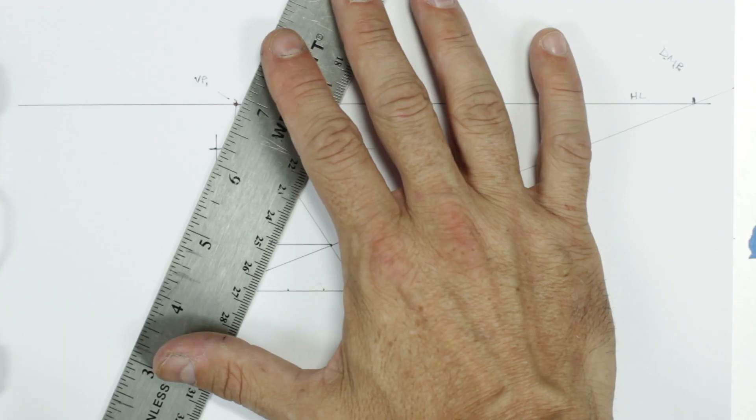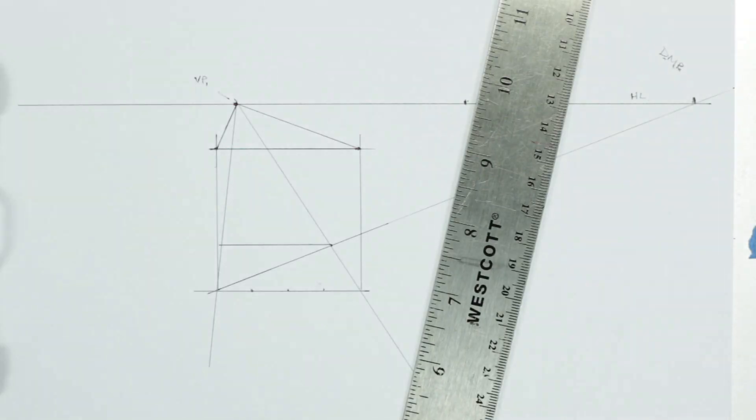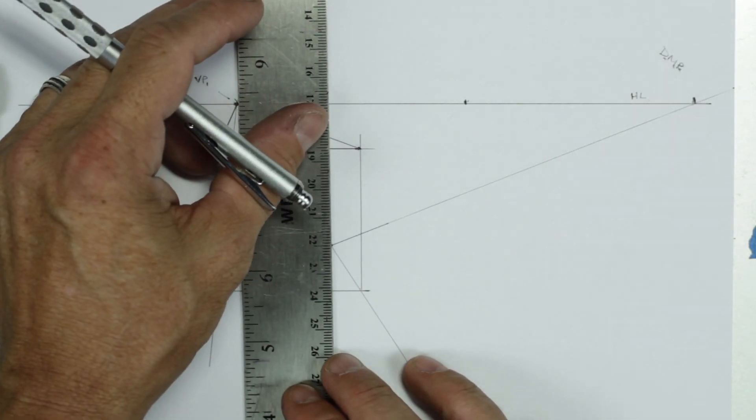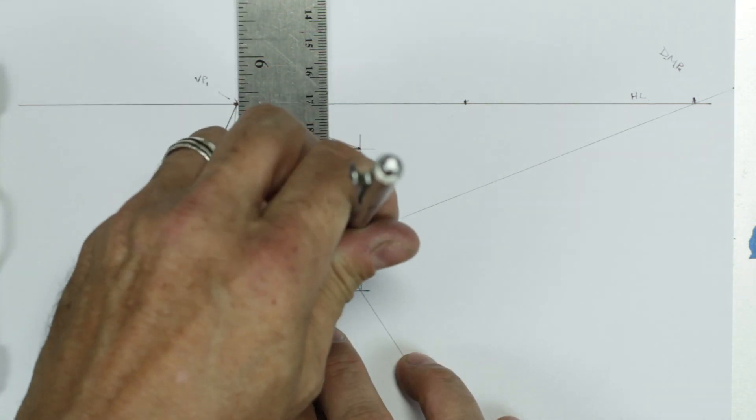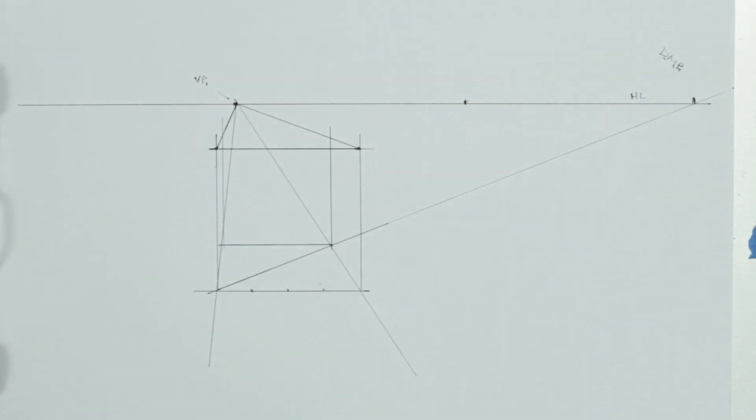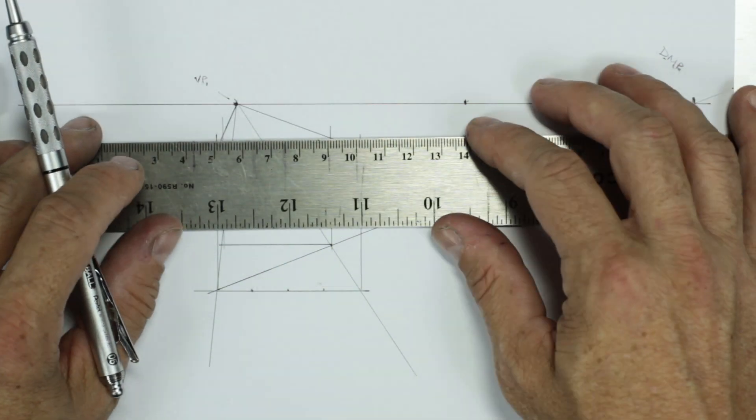Connect these two points. Connect these two points. Now we have the top surface of our cube. All we have to do now is run two more parallel lines up our page. Here and here. And that helps us represent the back plane of our box.